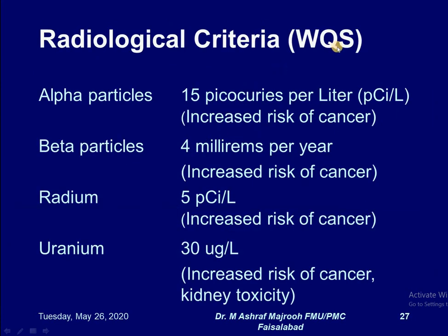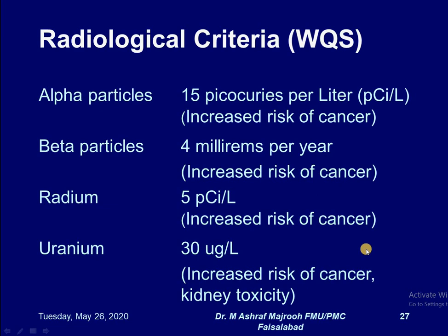Radiological water quality standards: alpha particles — 50 picocuries per litre; more than that will increase the risk of cancer. Beta particles — 4 millirems per year; exceeding this increases cancer risk. Radium should not be more than 5 picocuries per litre — excess increases the risk of cancer. Uranium — 30 microgram per litre; excess increases the risk of cancer and kidney toxicity. These are the radiological quality standards set by the Government of Pakistan.